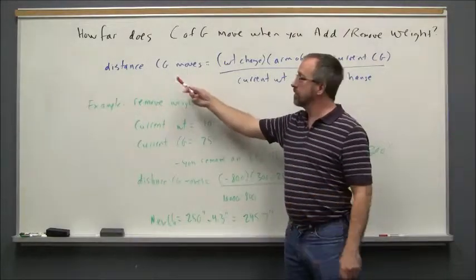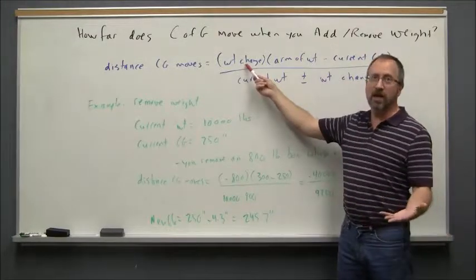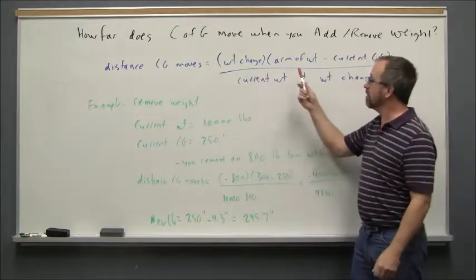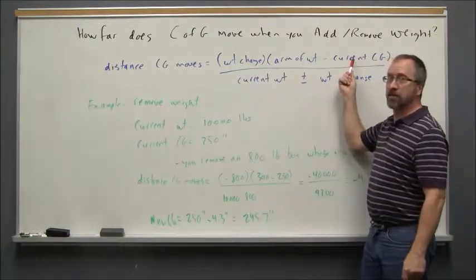The calculation we use is: the distance the center of gravity moves equals the weight change. So plus or minus - if you're adding weight it's a positive number, if you're removing it's negative. Multiply that by the arm of the weight minus the current center of gravity.